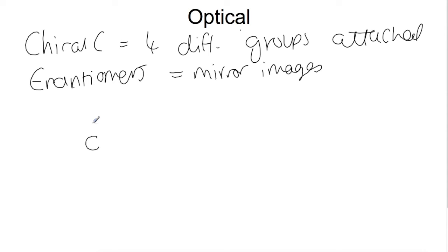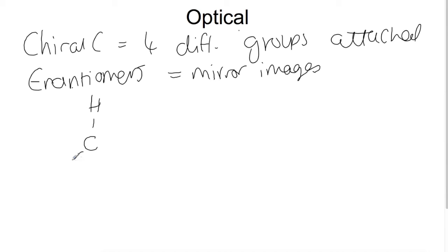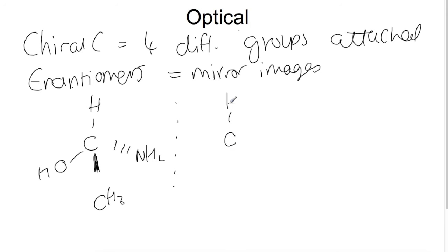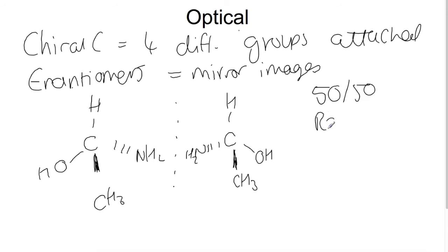If we are to draw a pair of enantiomers, we're going to use the 3D shape to be able to draw these. I'm going to draw a dotted line down the middle to represent a mirror. Here we have two enantiomers. If you have a 50/50 mixture of two enantiomers, this is called a racemic mixture. There is no chemical difference between enantiomers except when they are in a chiral environment such as a biological system.